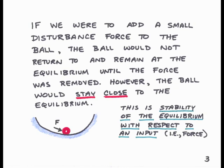Here is our second test of this equilibrium. If we were to add a very small disturbance force to the ball, the ball would not return to the equilibrium — it would move away, but it wouldn't move very far away if the force was small. It would stay there, away from the equilibrium, until the force was removed, but it would stay close to the equilibrium. So this is another kind of stability — stability of the equilibrium with respect to an input, in this case, the force. Note that this kind of stability does not require the ball to return back to the equilibrium while the force is being applied, but it does require the ball to stay close. So we've seen two different kinds of stability: one with respect to a disturbance of initial conditions, and the other with respect to an input.